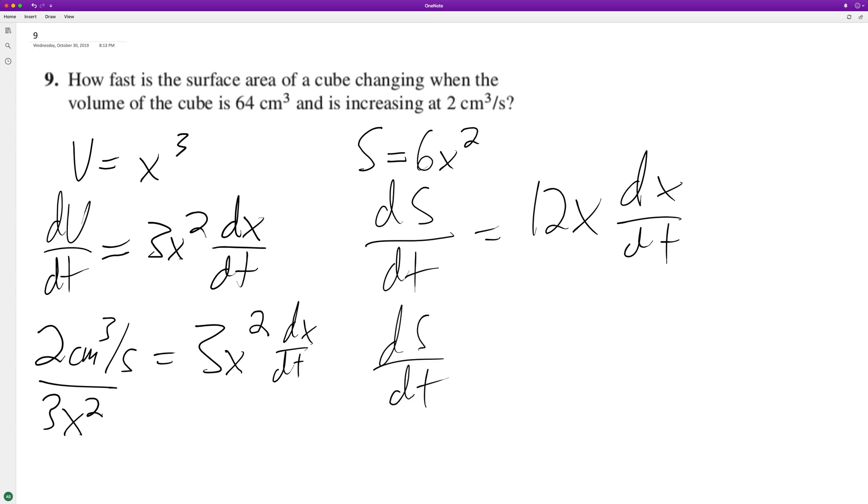So dS/dt is going to be equal to... When we do this, that's what we set dx/dt equal to. We just substitute for it. And based off of that we can likely solve it. So 12x times 2 centimeters cubed per second divided by 3x squared.